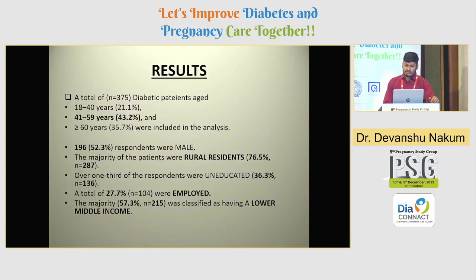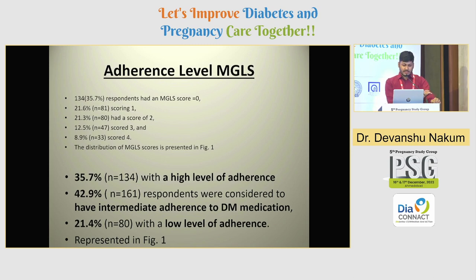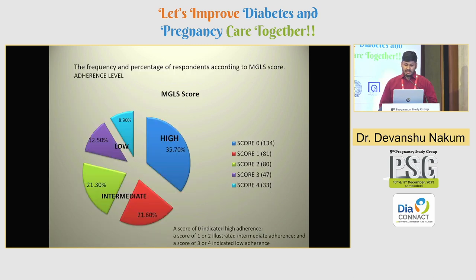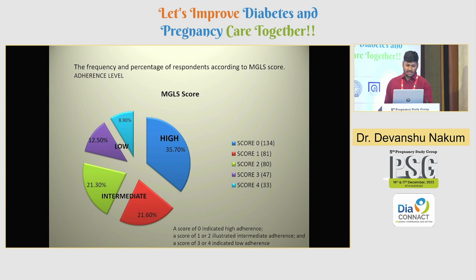The results show that a total of 375 diabetic patients were included. The majority were aged between 41 to 59 years, comprising 43 percent. There were 196 male respondents. The majority of patients were from rural areas, with 36 percent uneducated, and 27 percent employed, and most classified in the low-middle income group. Regarding adherence levels, 35 percent had high adherence, 42 percent had intermediate adherence (score of one or two), and 21 percent had low adherence (score of three or four).